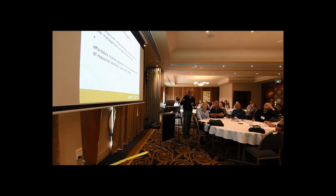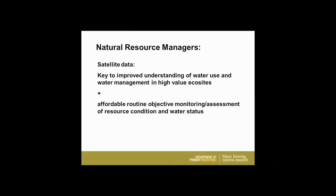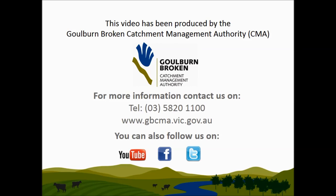Basically, we can do two sorts of things with these data: the basic asset monitoring — put numbers on what's there and write reports about it — talking about condition in terms of both water use rates and the amount of vegetation, what the condition is. But also we can start to tackle getting a better understanding of water limitations within these assets, and build up our information and understanding of how these systems actually work. For natural resource managers, satellite data are a key to improved understanding of water use and water management within these high-value ecosystems. They offer an affordable, routine, objective monitoring and assessment of resource condition and water status.